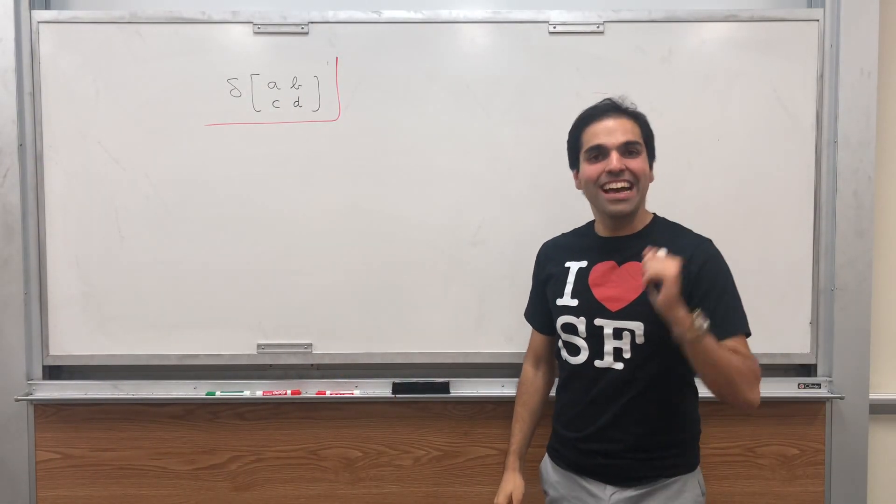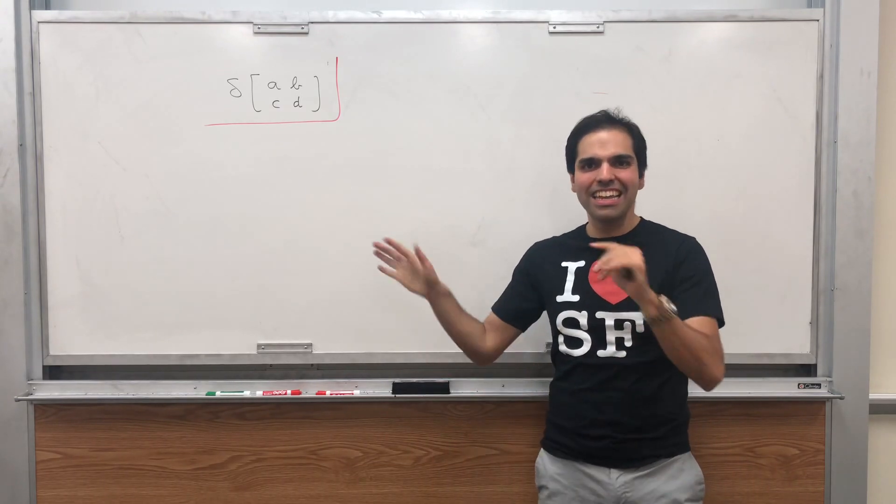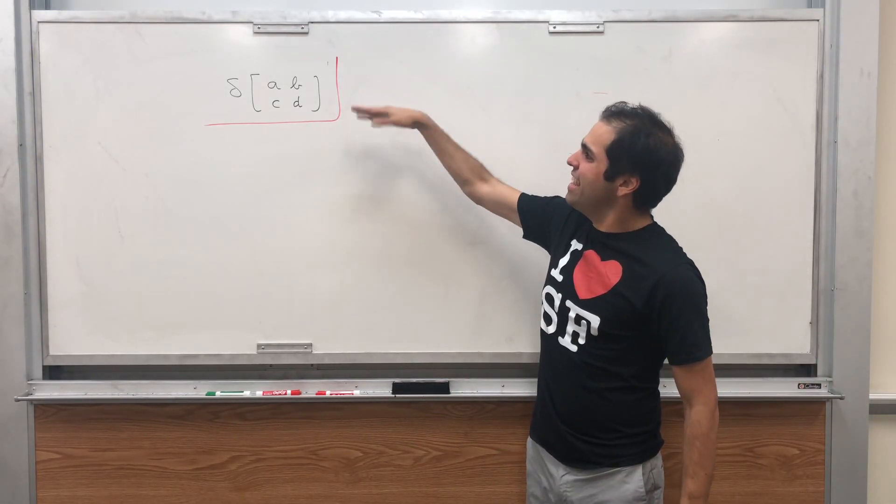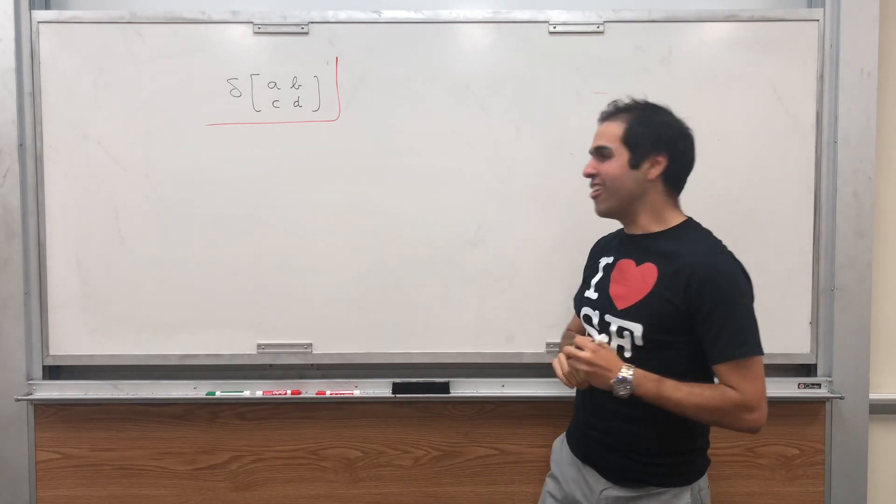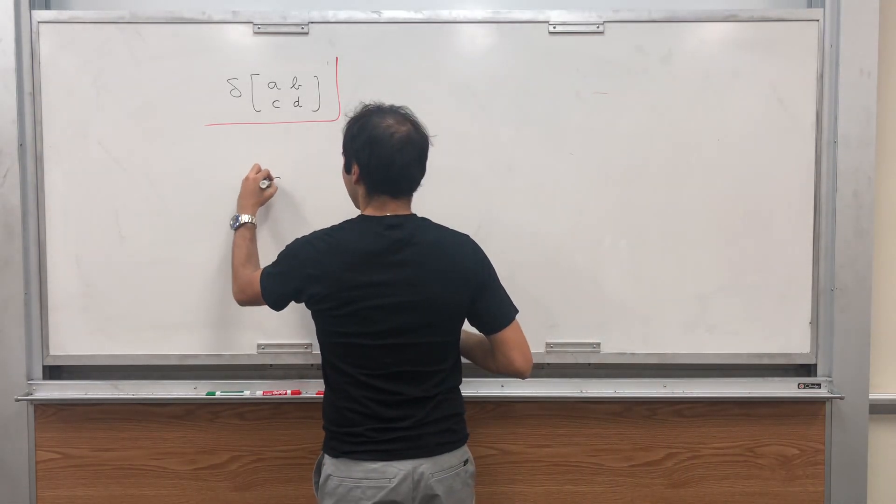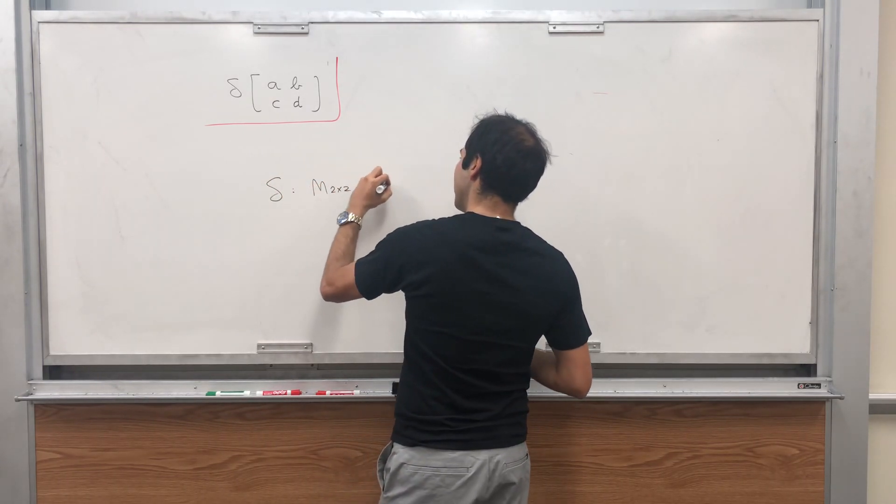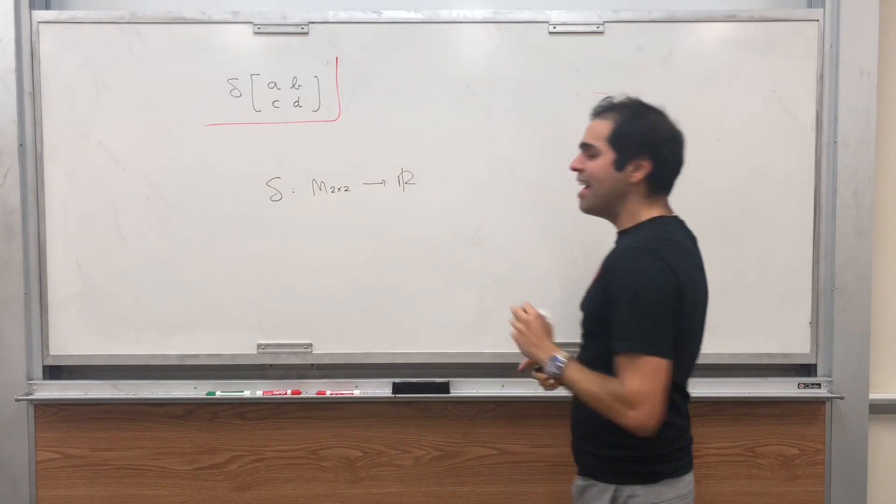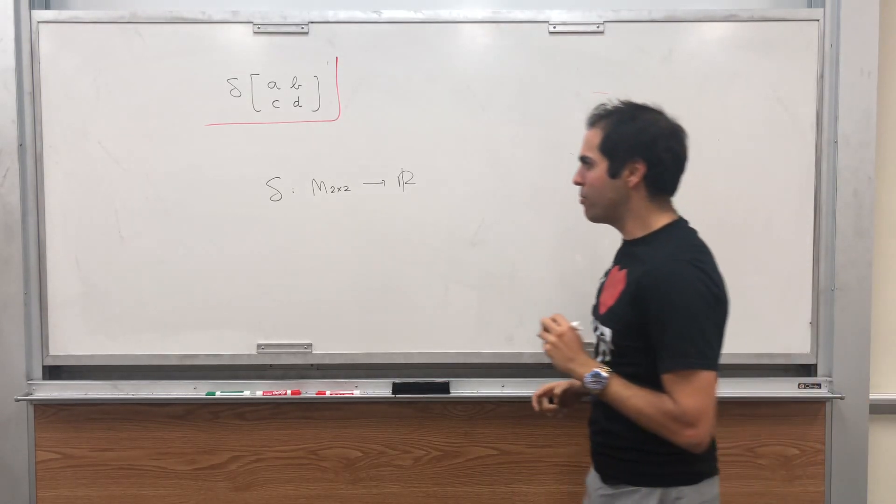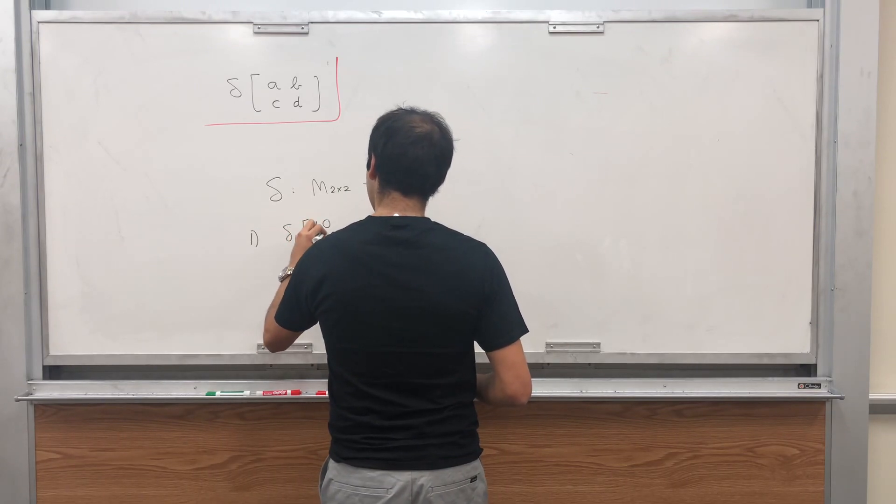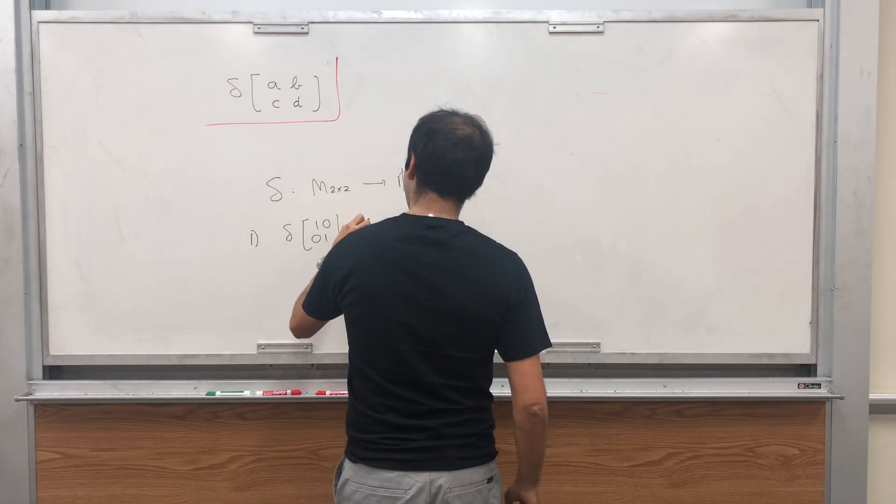All right, thanks for watching. Today I would like to play a little game with you because math is fun. Suppose I am a function from two by two matrices to the real numbers and I satisfy the following properties. First of all, my value at the identity matrix 1, 0, 0, 1 is 1.